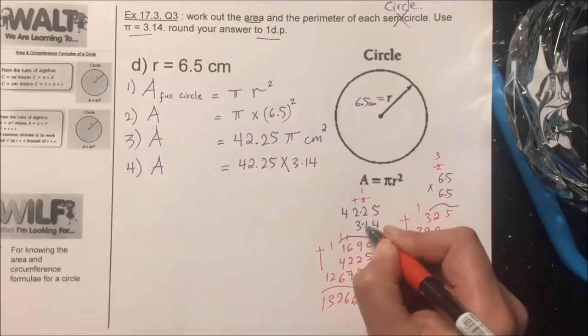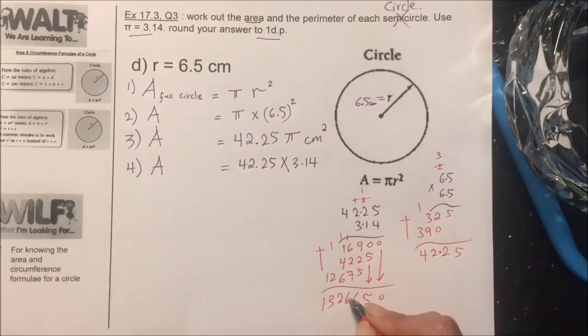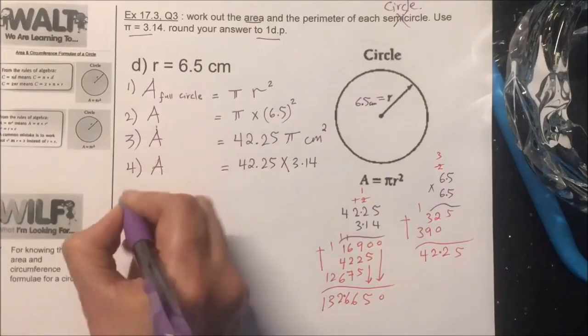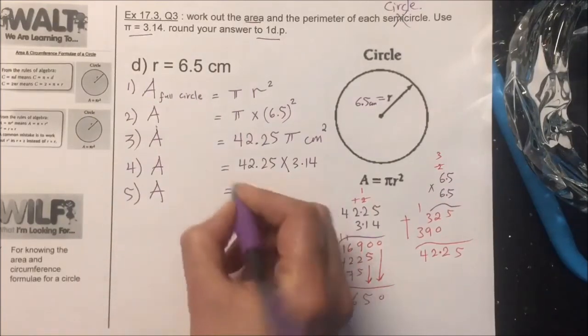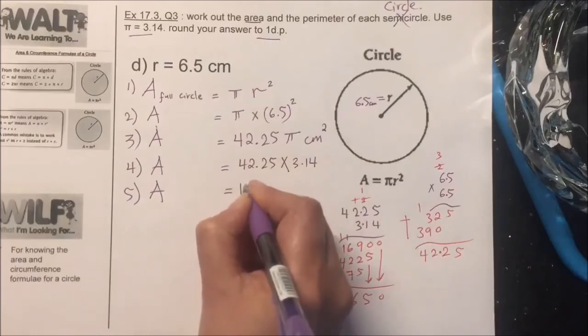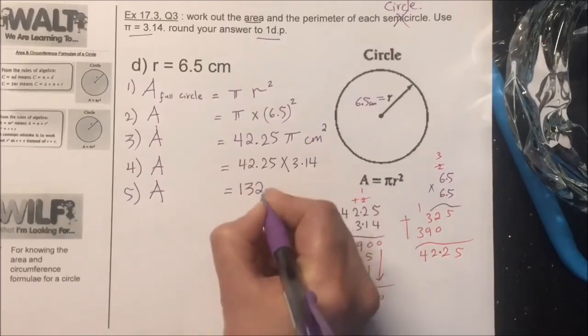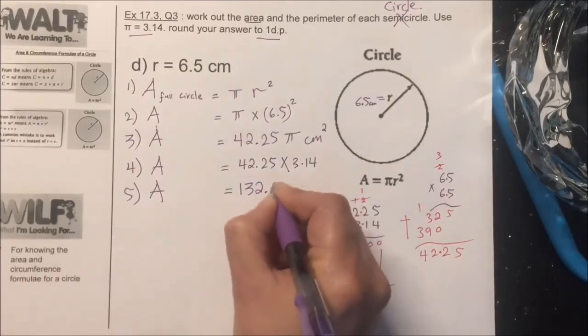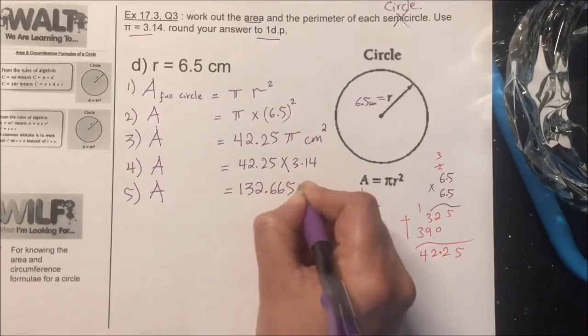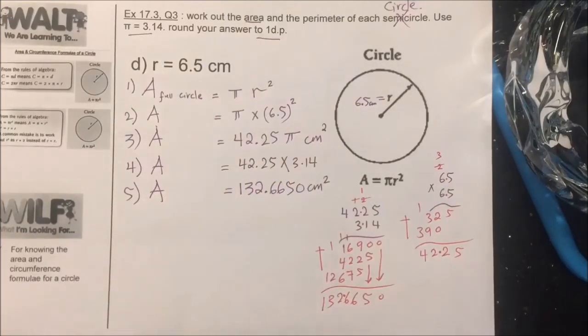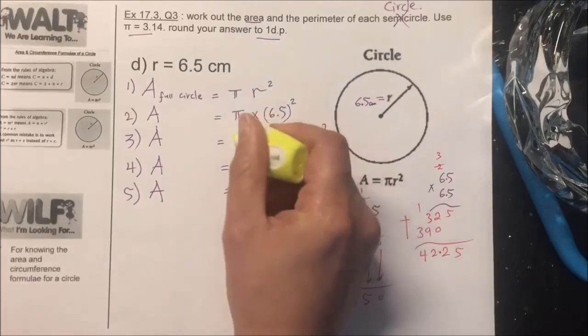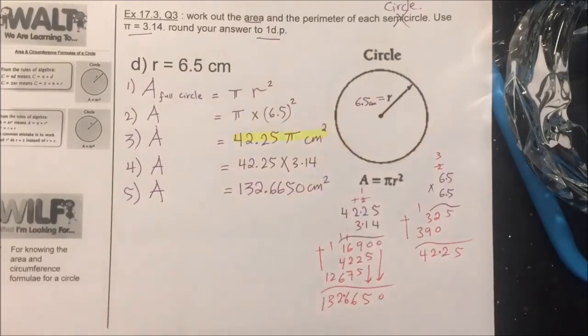We have a decimal here and a decimal here. One, two, three, four. One, two, three, four. And the final answer for the area of the circle is 132.665 centimeter squared.